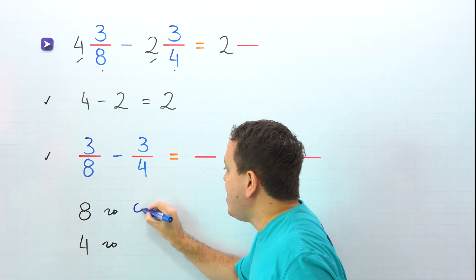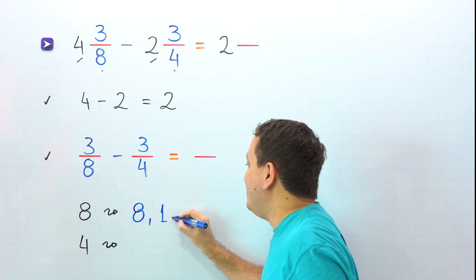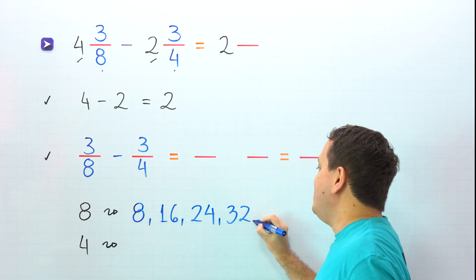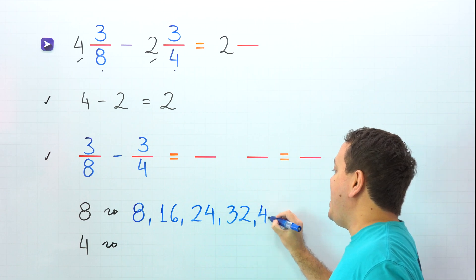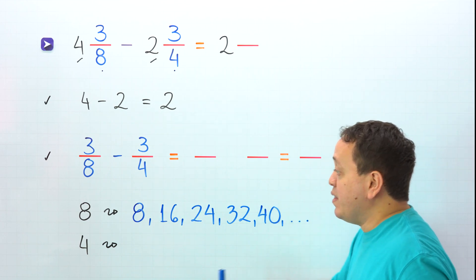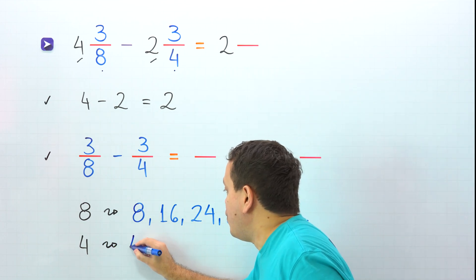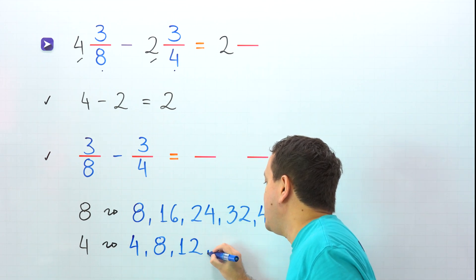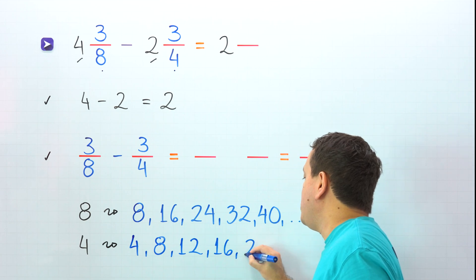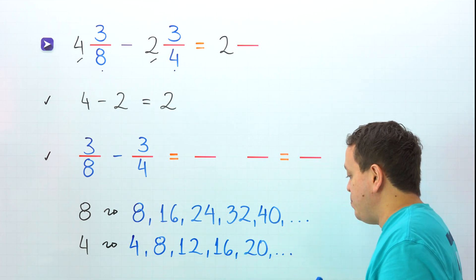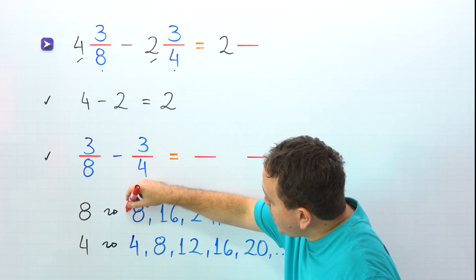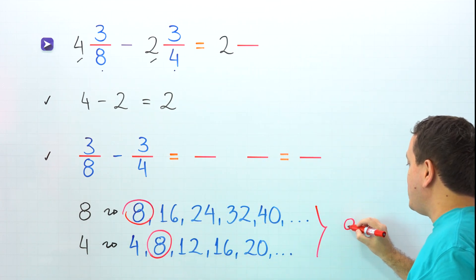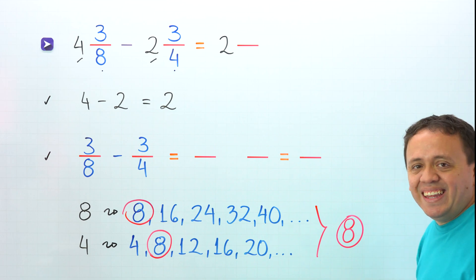The first multiples of 8 are 8, 16, 24, 32, 40, and so on. The first multiples of 4 are 4, 8, 12, 16, 20, and so on. The smallest number that we can find on both lists is 8. Therefore, 8 is the least common denominator.